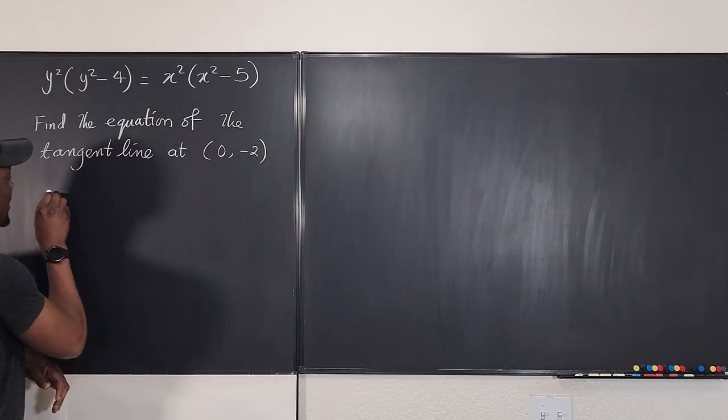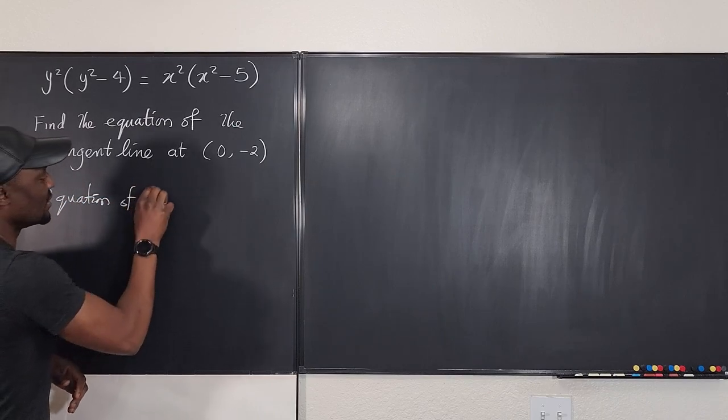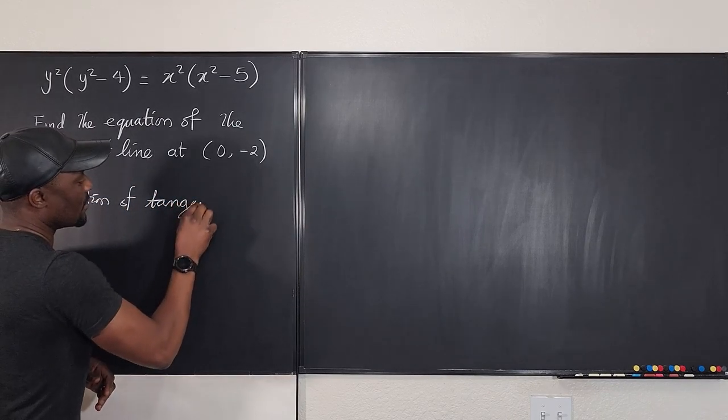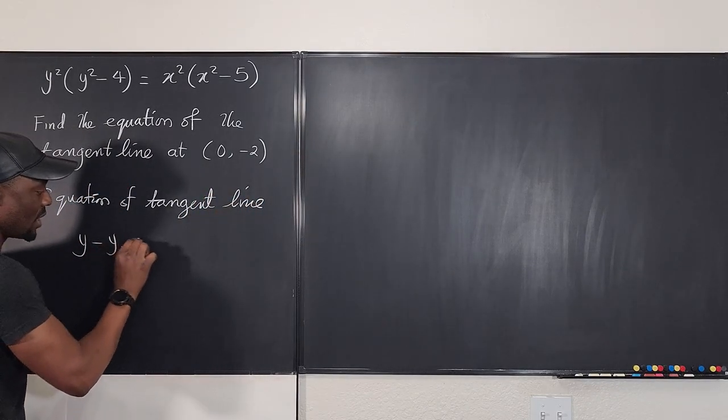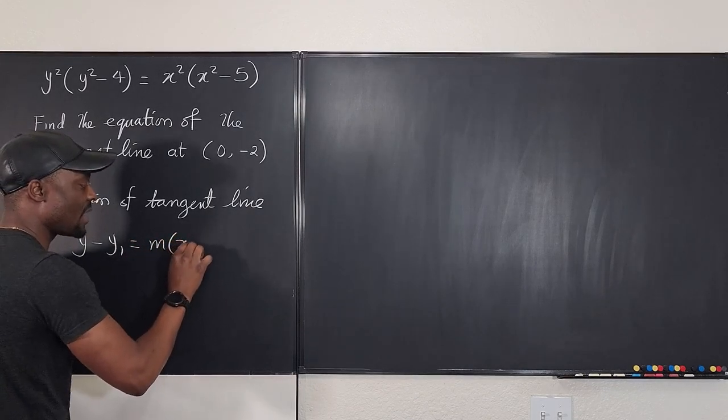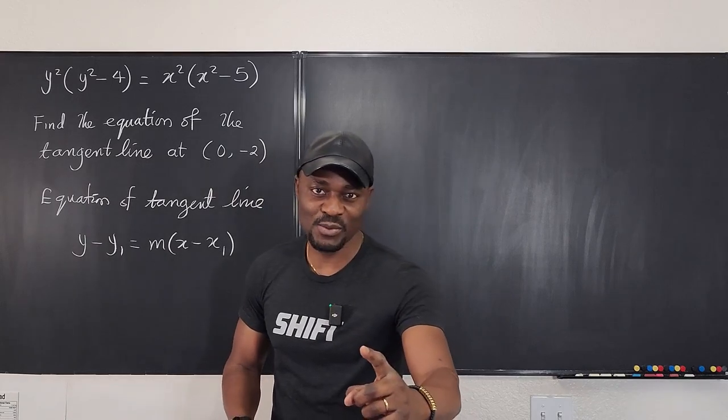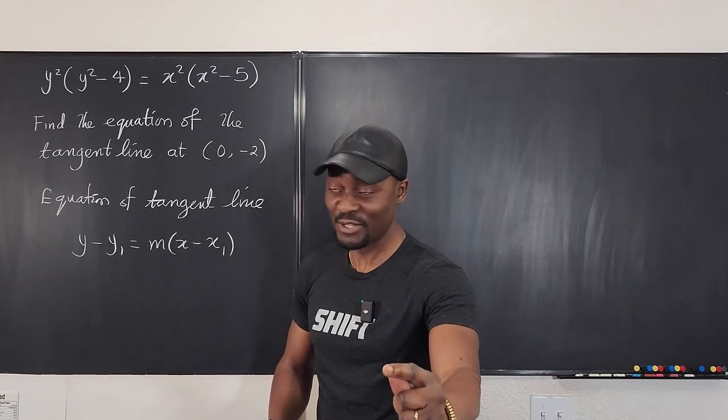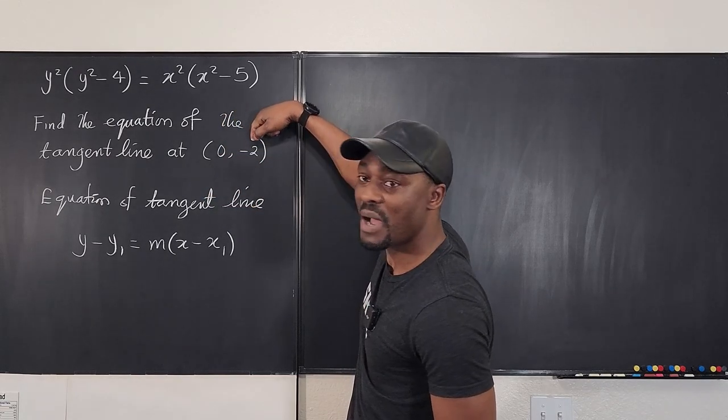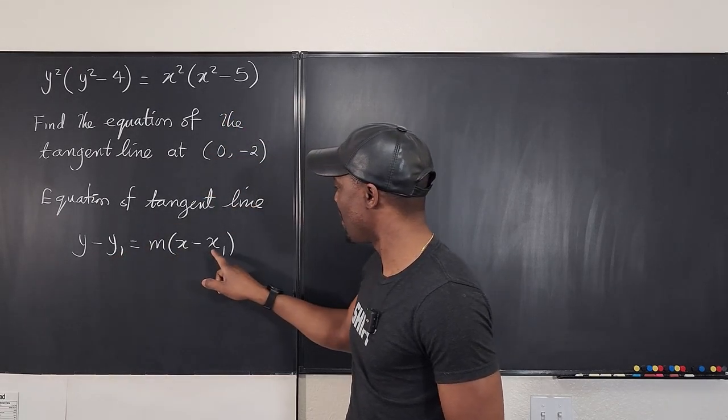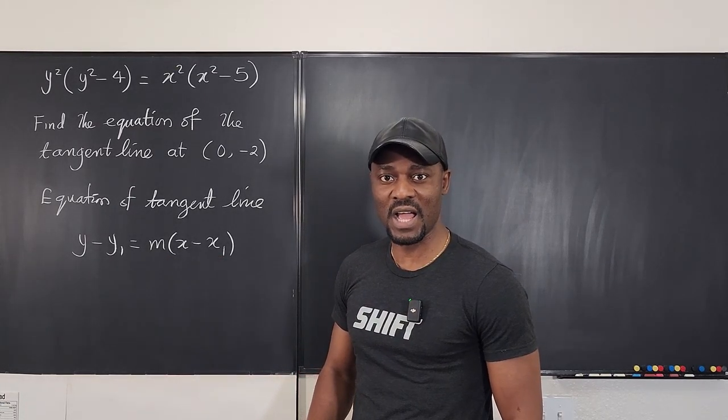We know we're going to have the equation of tangent line will be given as y minus y1 equals m into x minus x1. The question is do you know what x1 is? Do you know what y1 is? Yes I do because that's what you got here. This is my x1 this is my y1. I can plug that in here and in here. The only thing I don't know is the slope of the line.